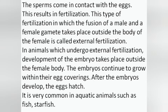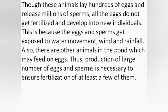You may have a question: why do fish and frogs lay eggs in hundreds, whereas a hen lays only one egg at a time? Though these animals lay hundreds of eggs and release millions of sperms, not all eggs get fertilized and develop into new individuals. This is because the eggs and sperms get exposed to water movement, wind and rainfall, and other animals in the pond may feed on the eggs. Thus, production of large numbers of eggs and sperms is necessary to ensure fertilization of at least a few of them.